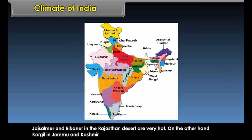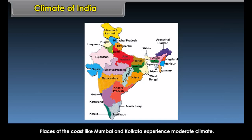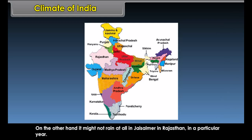Jaisalmer and Bikaner in the Rajasthan desert are very hot. On the other hand, Kargil in Jammu and Kashmir is freezing cold due to difference in altitude and location. Places at the coast like Mumbai and Kolkata experience moderate climate. Mawsynram in Meghalaya receives the world's highest rainfall, while it might not rain at all in Jaisalmer in Rajasthan in a particular year.